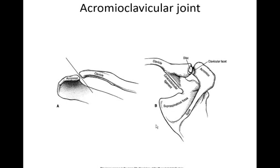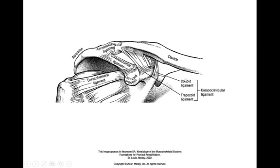Let's move on to the acromioclavicular joint. This is an articulation between the lateral end of the clavicle and the acromion. It's mostly a gliding joint, and again it does have three degrees of freedom. Sometimes there's a little disc in between there as well. It's a very stable joint with not much motion, and we see very strong ligaments — the coracoclavicular ligaments running from the coracoid process up to the clavicle, divided into the conoid and trapezoid ligaments, and a strong acromioclavicular ligament binding the clavicle and the acromion process together.